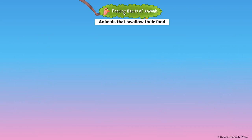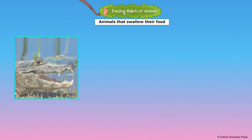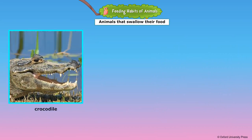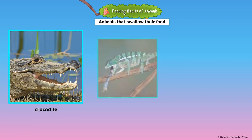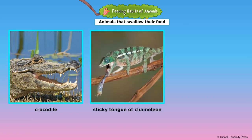Some animals such as frogs, snakes, lizards, and crocodiles swallow their prey whole. Snakes can open their mouth very wide and swallow animals or eggs. Frogs and chameleons have a long sticky tongue — they shoot out their tongues to catch insects and swallow them whole.